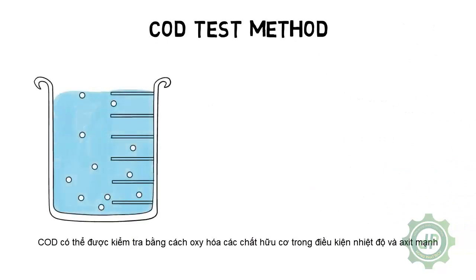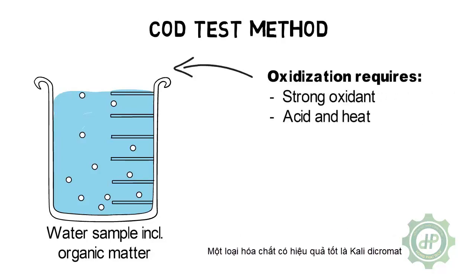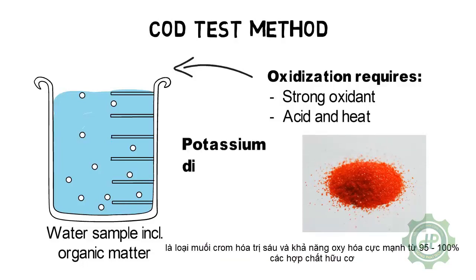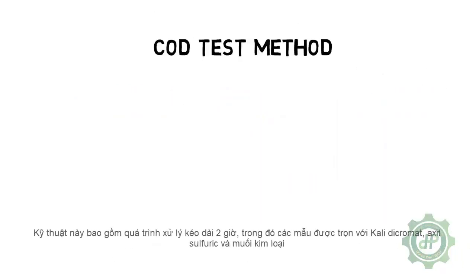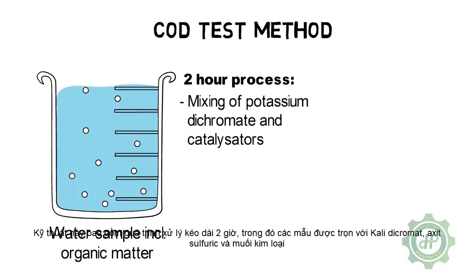COD can be tested by chemically oxidizing organic matter under conditions of heat and strong acids. The presence of a very strong oxidant is necessary to ensure proper measurement. The most common oxidant applied is potassium dichromate, which is a hexavalent chromium salt and a very strong oxidant, oxidizing between 95 to 100 percent of all organic matter.